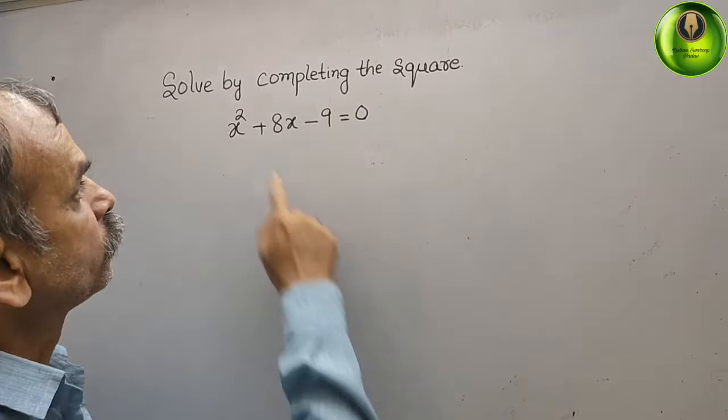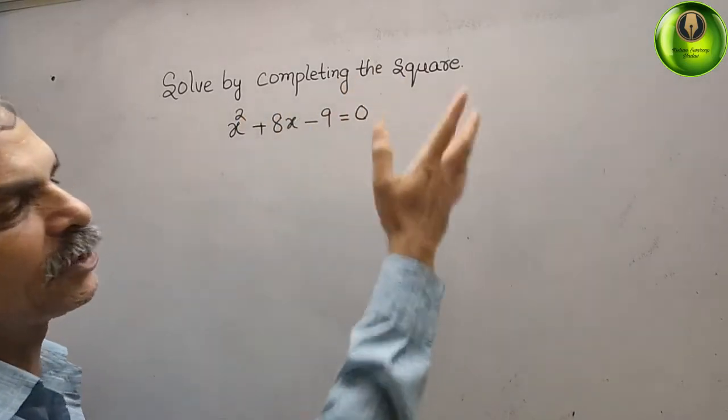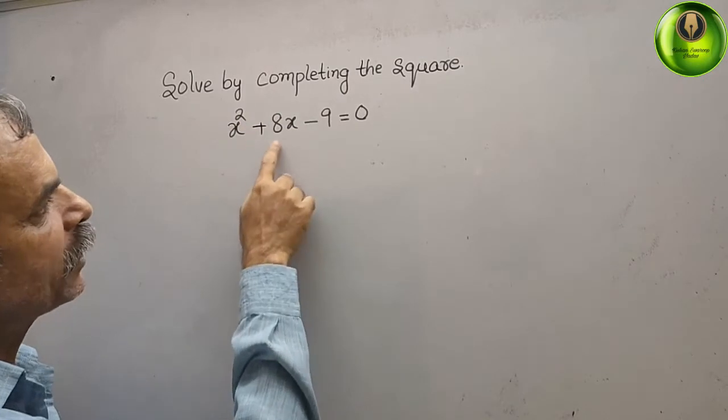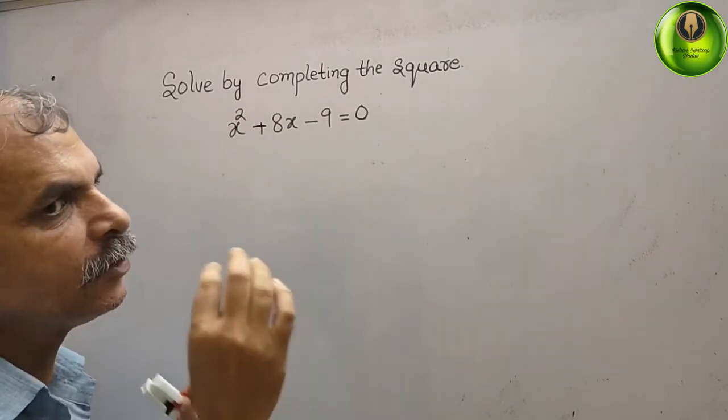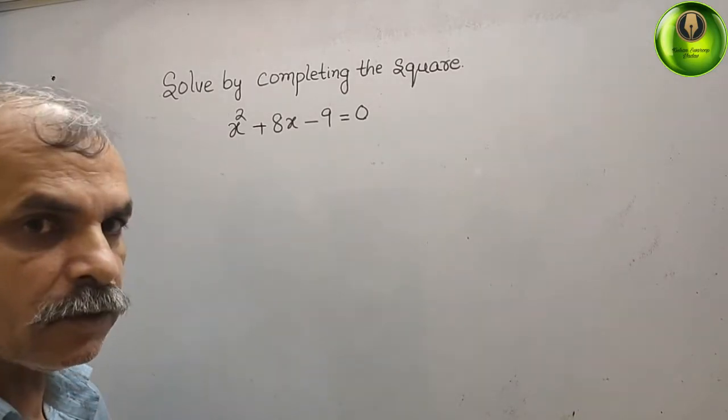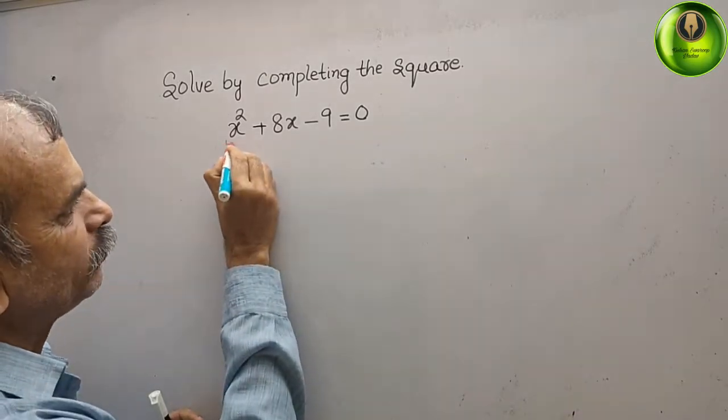Your question is solve by completing the square. What they have given: x² + 8x - 9 = 0. Now just you have to see up to here only, first and second term.